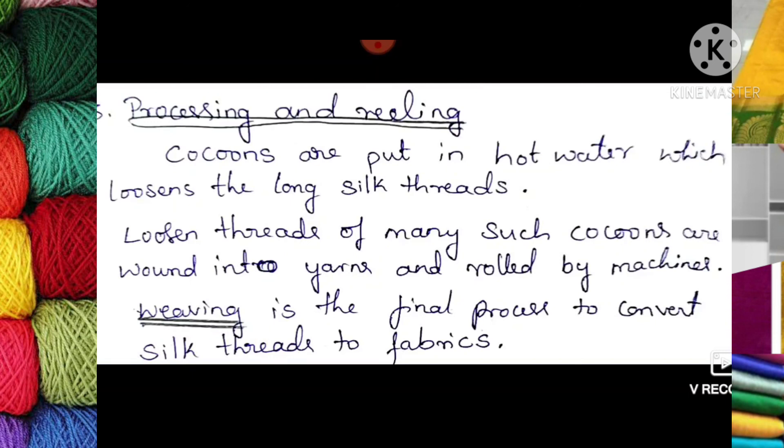Weaving takes place here too, but in a different process and style compared to wool. Weaving is the final process to convert silk threads into fabric. We have studied today about wool and silk processing — reeling, creating yarn, extraction, dyeing, cleaning, and the life cycle of silkworm. Let us meet in the next video. Till then have a nice day, be healthy, stay at home, stay happy.